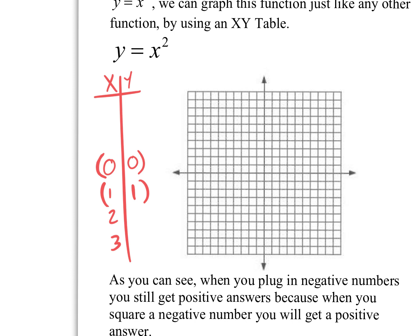Let's graph both of these. The point (0, 0) is dead center. (1, 1) would be 1 on the x, 1 on the y — right there. So it kind of looks like a diagonal line. But when I plug in 2, what happens? What's 2 squared? It's 4 — 2 times itself gives you 4. So 2 on the x, 4 on the y is right here. It's definitely not a straight line.